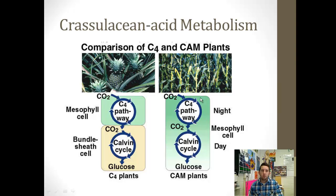So we have a temporal change: at night, we're taking in CO2 and storing it as organic acids — oxaloacetate, malate, et cetera. In the day, the stomata close so the plant doesn't dry out, and the CO2 is then delivered to the Calvin cycle for it to run normally.